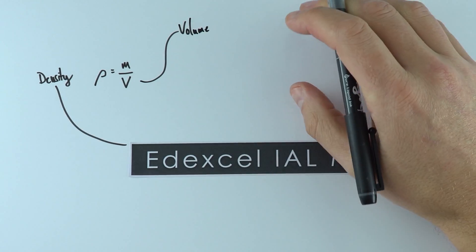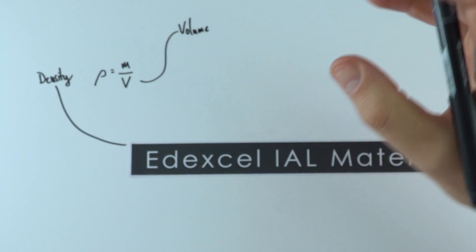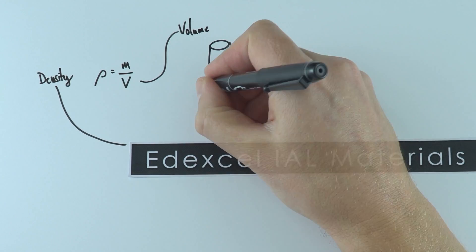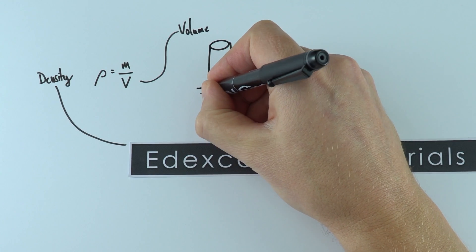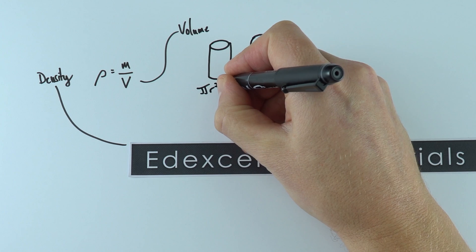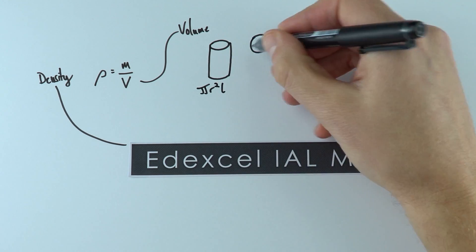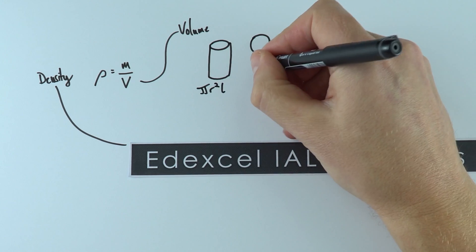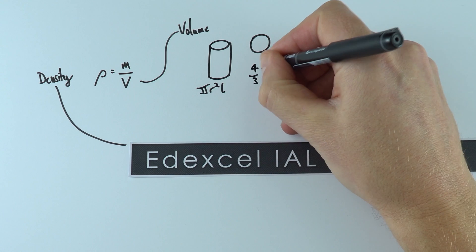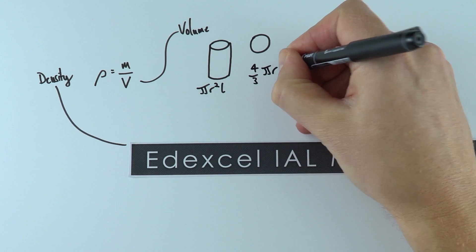These volume formulas come up all the time, so we're thinking about things like cylinders and spheres. For a cylinder it's going to be π r² times the length or height of that cylinder. For a sphere it's going to be equal to four-thirds π r³.